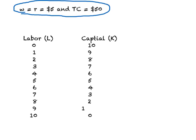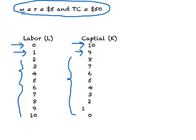There are different combinations of labor and capital that the firm can use, and it will still cost $50. For example, if the firm decides to use no workers and 10 machines, the total cost will be $50 — because 5 times 0 plus 10 times 5 equals $50. Or the firm can use one worker and nine machines, and again the total cost will be $50. In this way, we can find different combinations of labor and capital which will cost $50 when wages and rent equal $5.